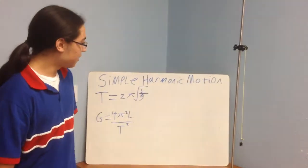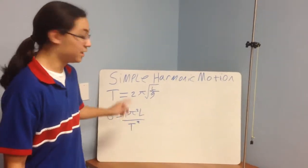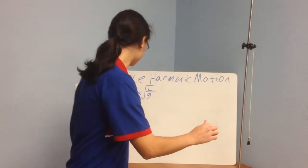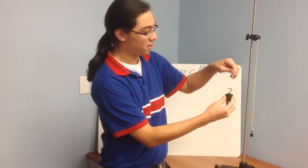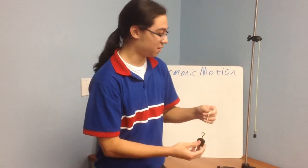Since we know that gravitational acceleration is affected by length, what affects time? The only thing that affects time in a simple pendulum is the weight of the pendulum bob.